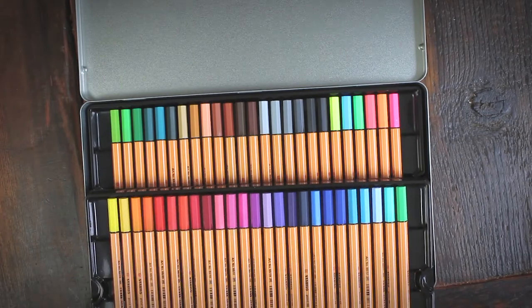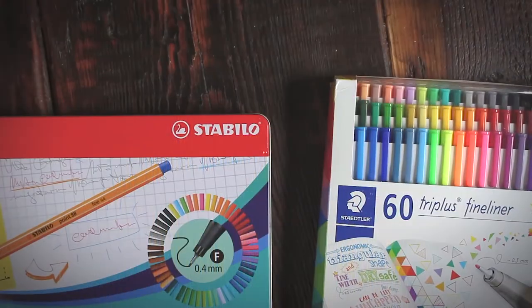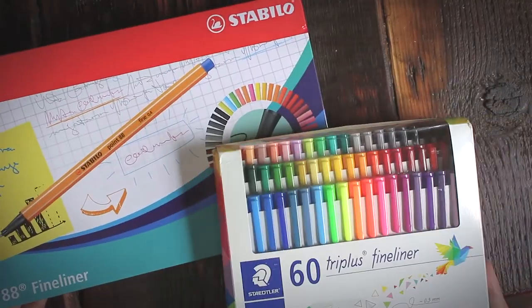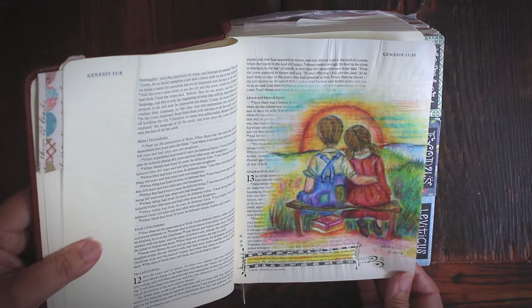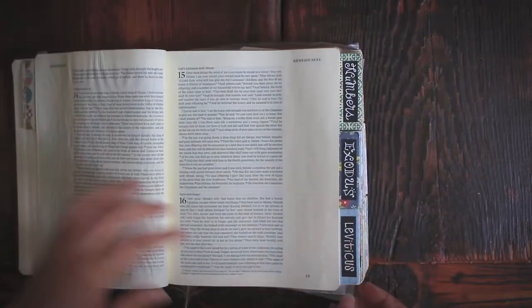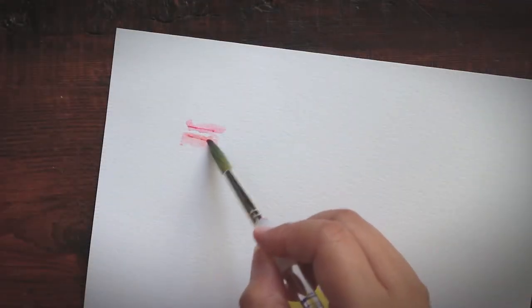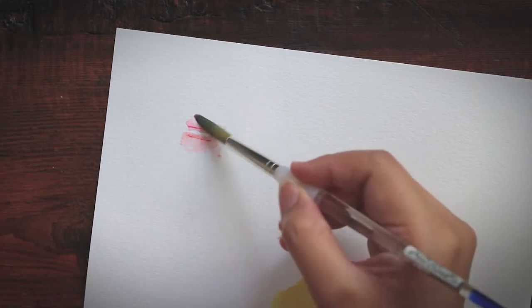So in this video, I'll compare features between Staedtler and Stabilo. I'll run a swatch test and check their performance on thin bible paper. I'll check their water solubility. Okay, so now let me run the basic stats first.